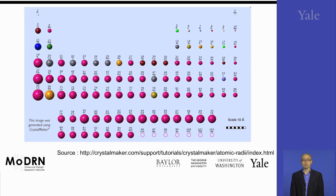In our previous lecture, we covered that the atomic radii have a periodic tendency across rows and columns on the periodic table. This is one of the most fundamental properties of the elements, and I'm going to use this information to derive other property tendencies in our lecture.